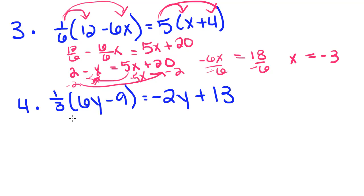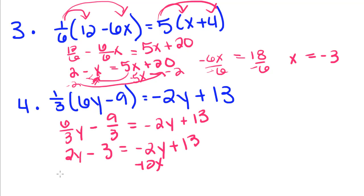We have one more problem, and we're going to do it the same way. 6 divided by 3 times y, minus 9 divided by 3, is equal to negative 2y plus 13. 6 divided by 3 is 2. 2y minus 9 divided by 3, which is 3, equals negative 2y plus 13. I'm going to add 2y to both sides, get 4y is equal to, add 3 to both sides, 16. y is equal to 4.